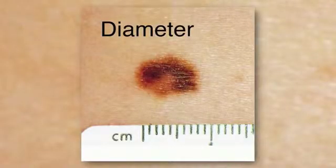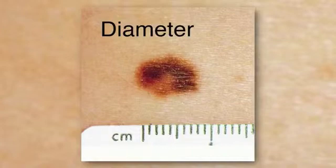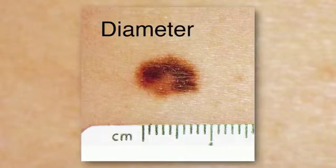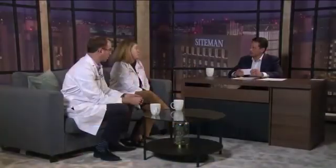Diameter is probably the least reliable one, but some melanomas often will be bigger than a pencil eraser. And then E stands for evolving or evolution, which means something that's new or changing or growing.